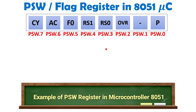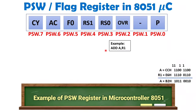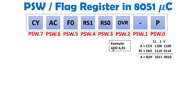Let me give you an example for more clarity. When you execute ADD A, R1, you are adding A and R1, and the answer gets stored inside A. Let's say A is CC hex, meaning 11001100 in binary, and R1 is E6 hex, meaning 11100110 in binary. We will now add both of these in binary.